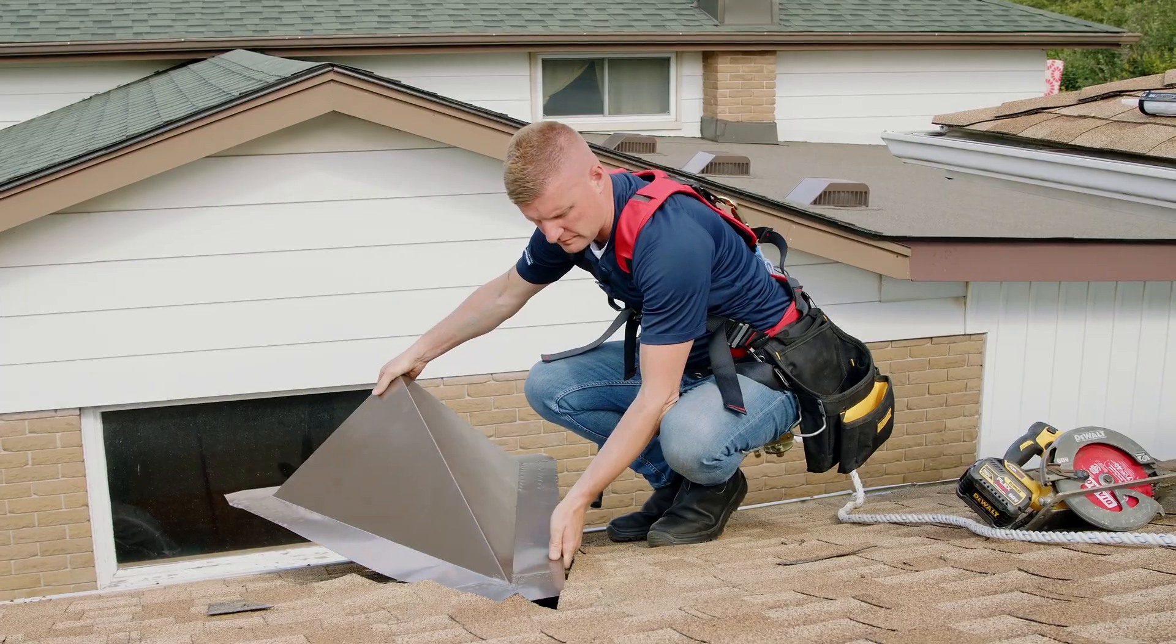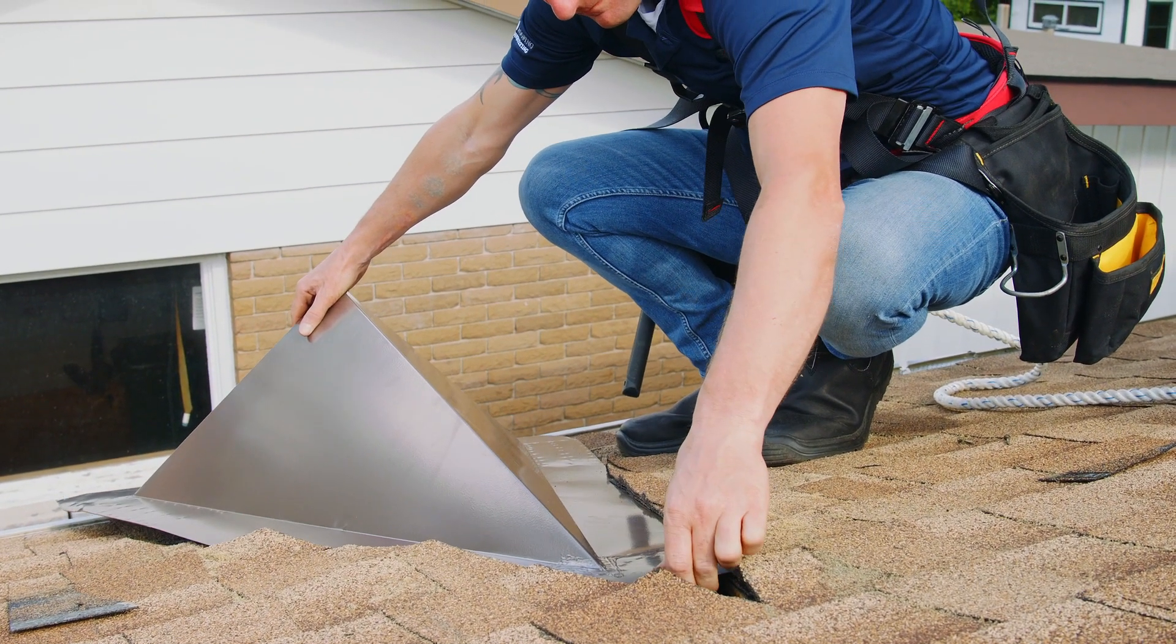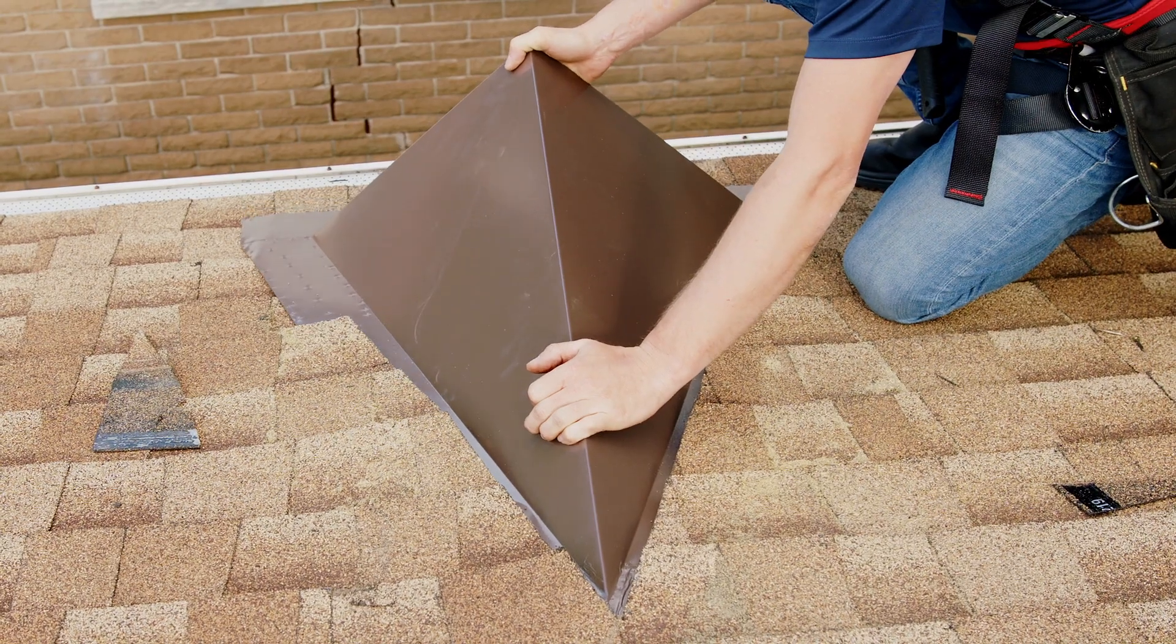With your plywood removed, slide your vent up underneath the shingles and make sure that the opening of the vent is in line with the opening of the roof.